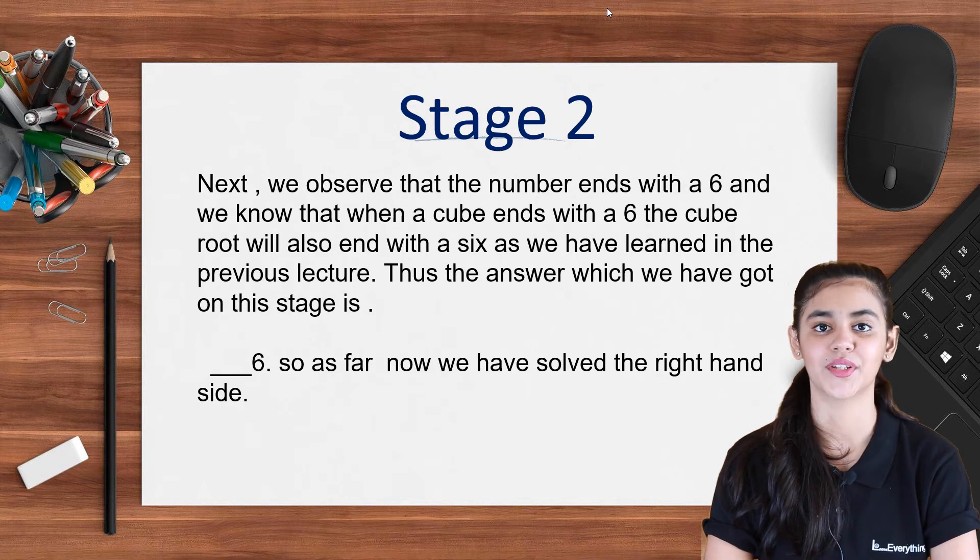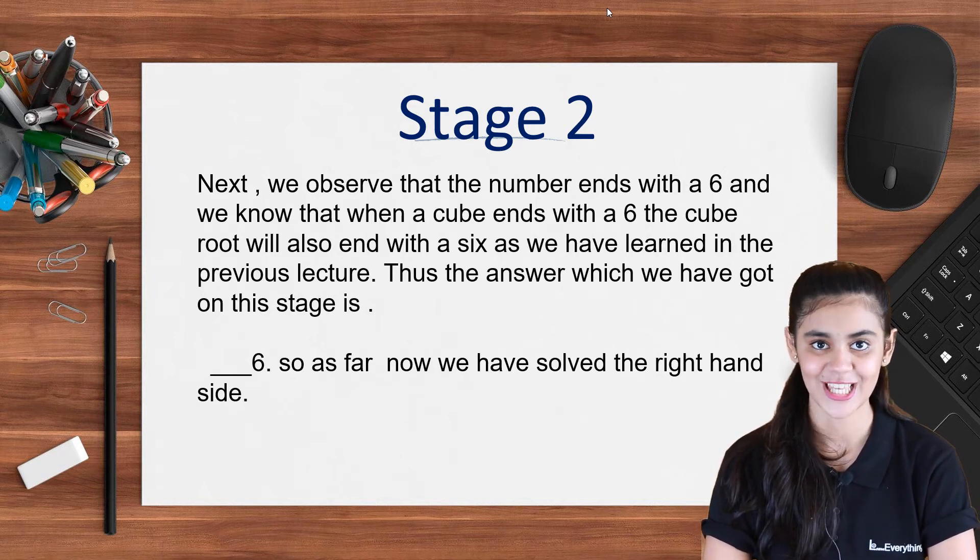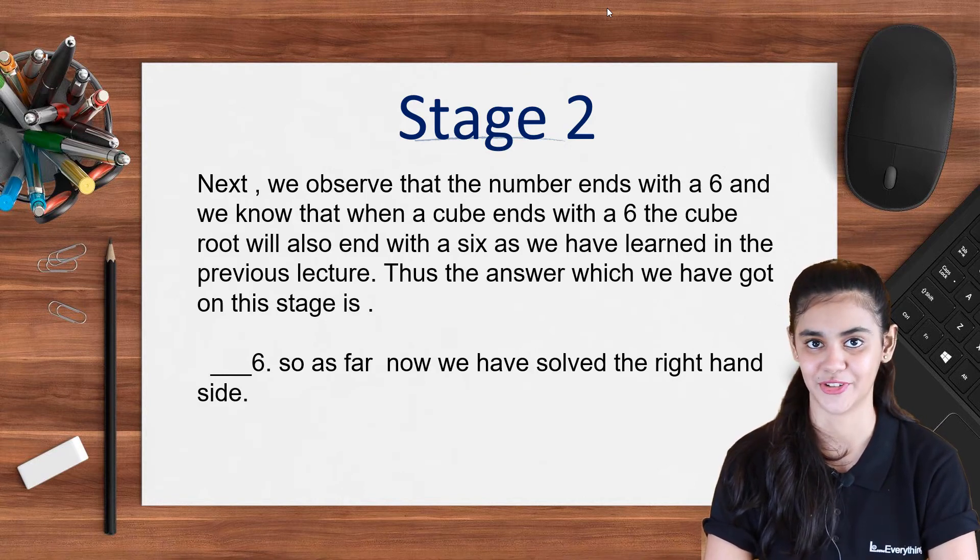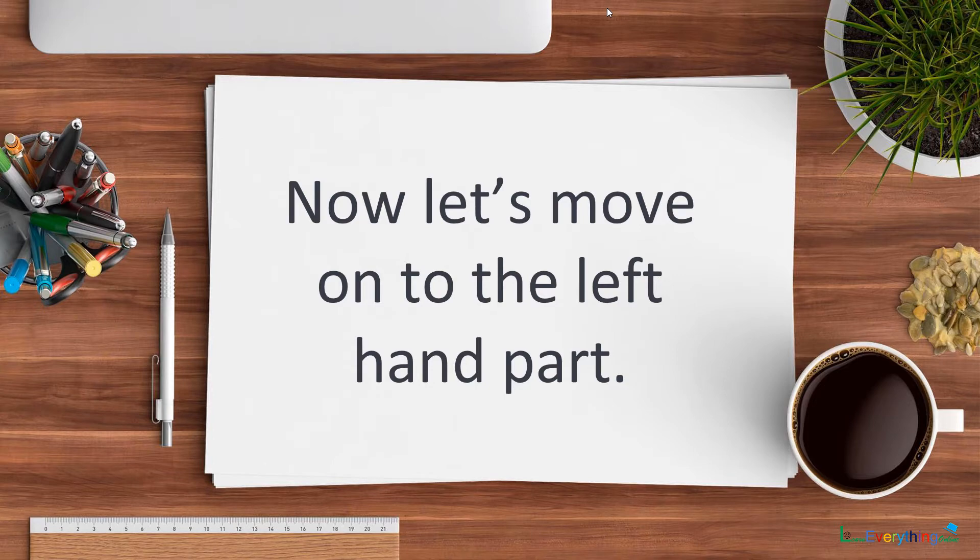This big number ends with a 6 and we know that when a cube root ends with a 6 the answer of the cube also ends with a 6. We learned the table before right. Now let's move on to the left hand part.